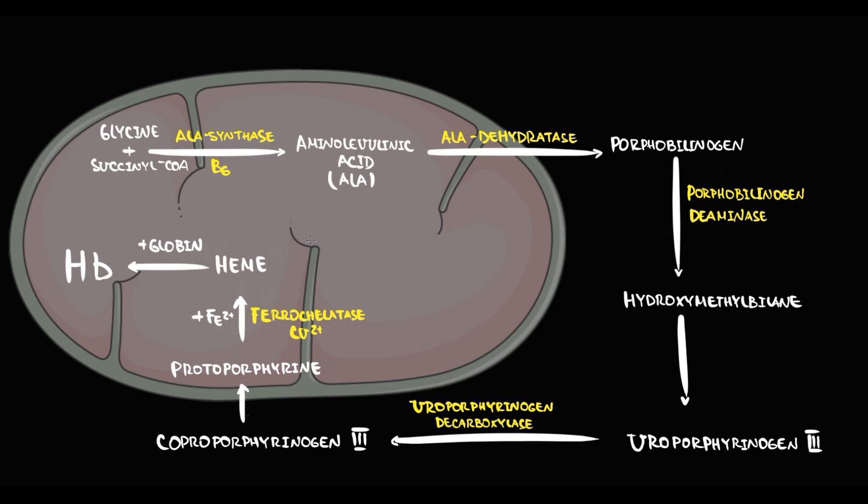But sometimes this pathway can be disrupted. We have several factors that can inhibit the function of enzymes involved in heme biosynthesis. First of all, it's genetic factors. For example, sometimes ALA-synthase enzyme can be simply absent. Such deficiency is usually caused by X-linked defect in the ALA-synthase gene. We call such condition genetic sideroblastic anemia. Without ALA-synthase we cannot form aminolevulinic acid, and as a result we cannot produce protoporphyrin.